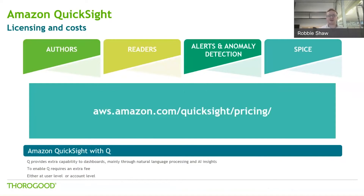I haven't mentioned any of the actual prices because they can change quite often, but you can go to the AWS QuickSight website, or you can contact us. We can give our best advice on what the best pricing model is to follow based on the type of your organization, how many users it has, and how you want to use QuickSight. Additionally, you can contact an Amazon rep about it as well.